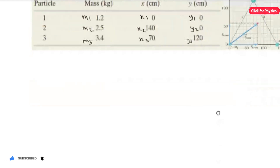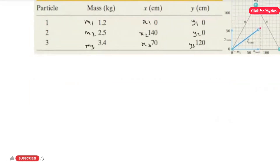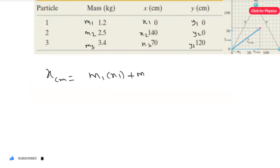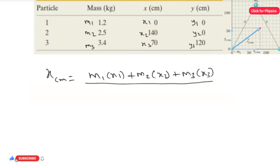The rule for finding the x center of mass is: x_cm = (m1·x1 + m2·x2 + m3·x3) divided by (m1 + m2 + m3).